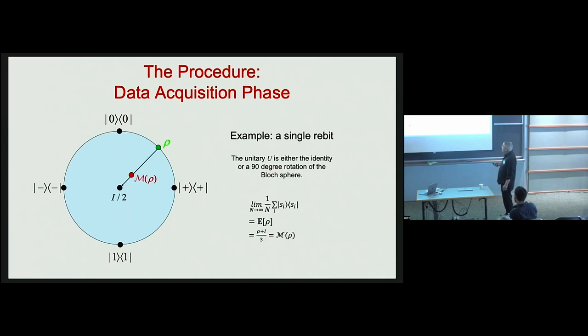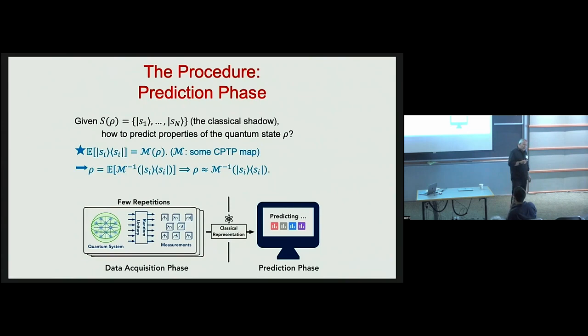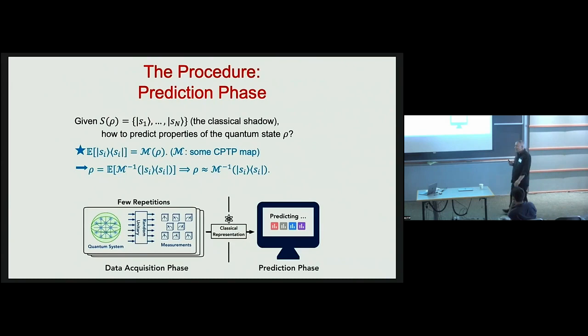We repeat this procedure many times and obtain many snapshots. If the measurements we are sampling from are tomographically complete, then the channel defined by the protocol is an invertible linear transformation. Its inverse is not a physical operation we can actually perform in the lab, but it doesn't need to be, because we're not going to execute it in the lab — we're going to apply it to classical data stored in a classical memory.